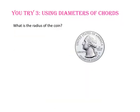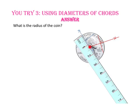Pause the video and do you try number 3. What is the radius of the coin? Begin by drawing two chords. With your compass point on each endpoint of the blue chord, draw two arcs above and below the chord, then draw in the perpendicular bisector. Repeat for the red chord. Where the perpendicular bisectors intersect is the center of the coin. Use a ruler to measure the distance from the center to the edge — the radius is 1.3 centimeters or 13 millimeters.